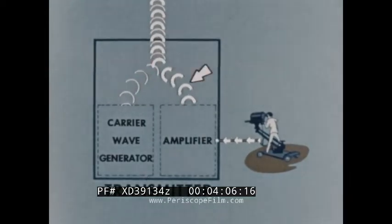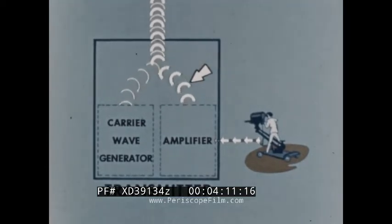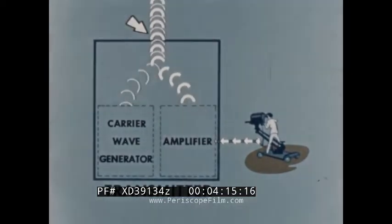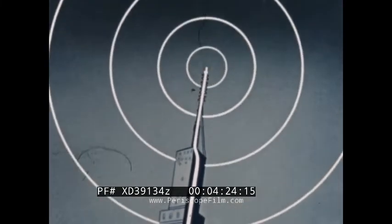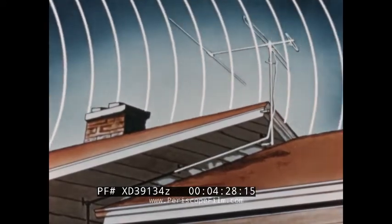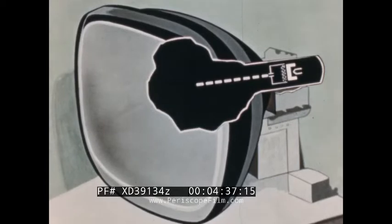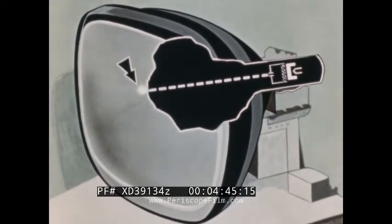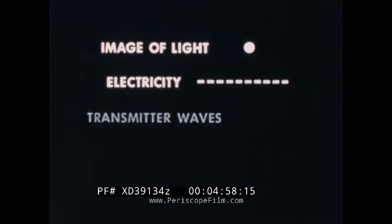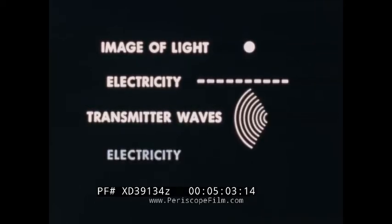In the television transmitter, this picture signal is amplified and combined with a very high frequency carrier wave. The carrier wave, with the fluctuation caused by the image of the gray dot, goes to the transmitter antenna and is radiated from the top of the tower. The receiver antenna picks up the wave and sends it down the lead-in wires to the receiver, where the signal controls the electron beam so that it strikes the fluorescent face just hard enough to make a gray dot on the receiver screen. Thus the basis of television is an image of light which controls electricity, which regulates transmitter waves, which again control electricity, and finally is turned back into light.